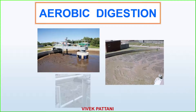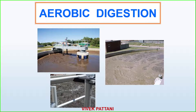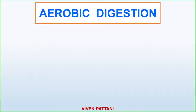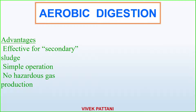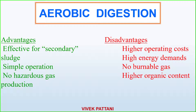In the case of aerobic digestion, the advantages include: it is effective for secondary sludge, simple in operation, and no hazardous gas production occurs. The disadvantages include higher operating costs, high energy demands, no burnable gas produced, and higher organic content remaining.